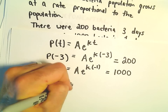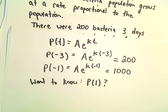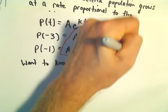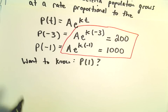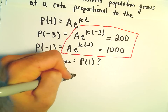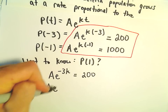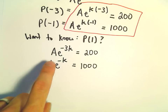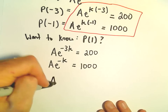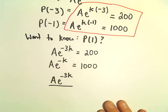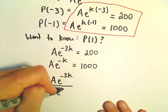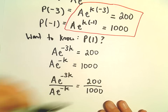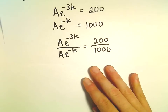We want to know the value of the population one day later. I'm going to take our two equations and use them to solve for everything we need. We've got A times E to the negative 3K equals 200, and A times E to the negative K equals 1,000. I'm going to divide these two equations. Notice the A's are going to cancel out.